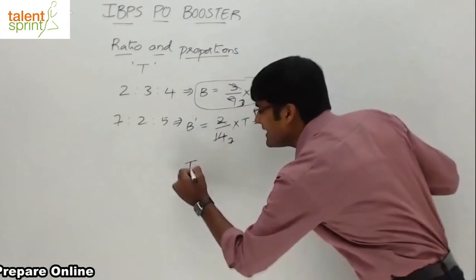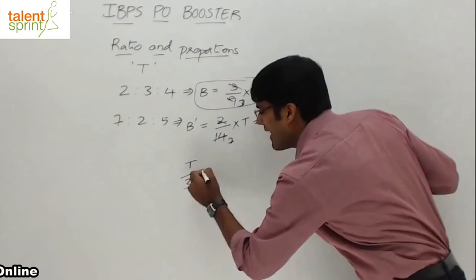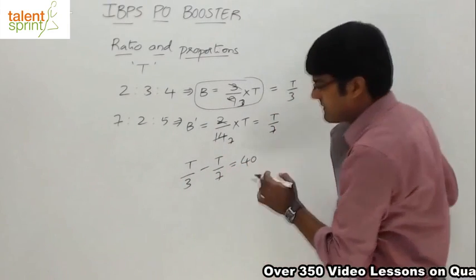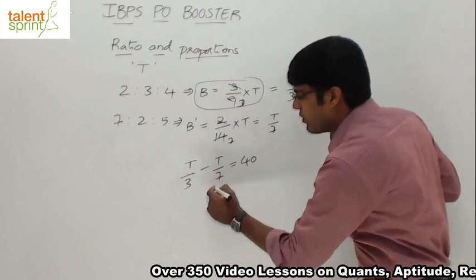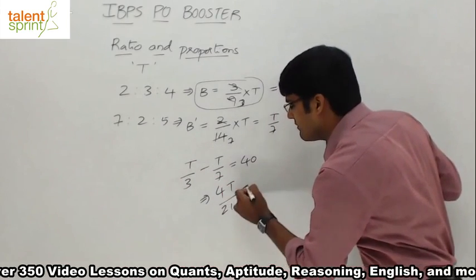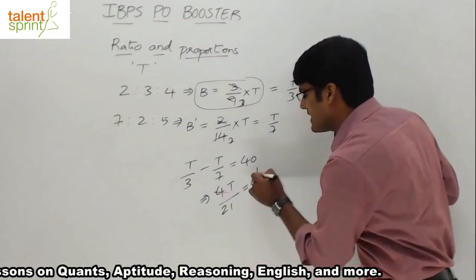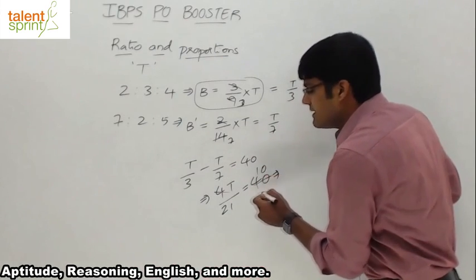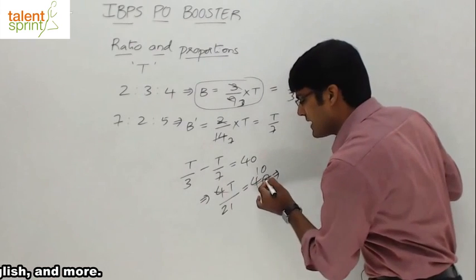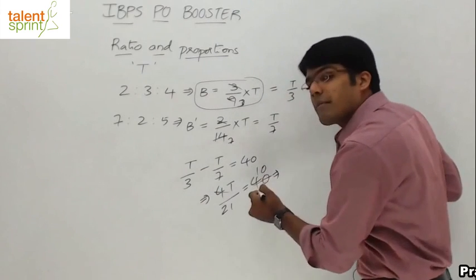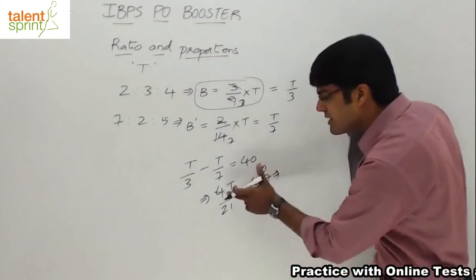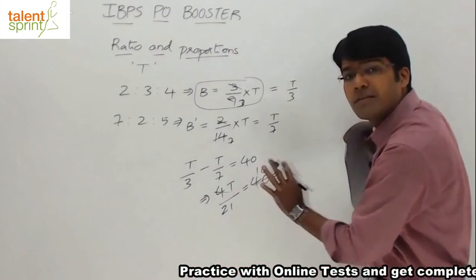So we can write: T/3 minus T/7 equals 40. Solving this: 7T minus 3T over 21 gives 4T/21 = 40. From this, T = 10 × 21 = 210.